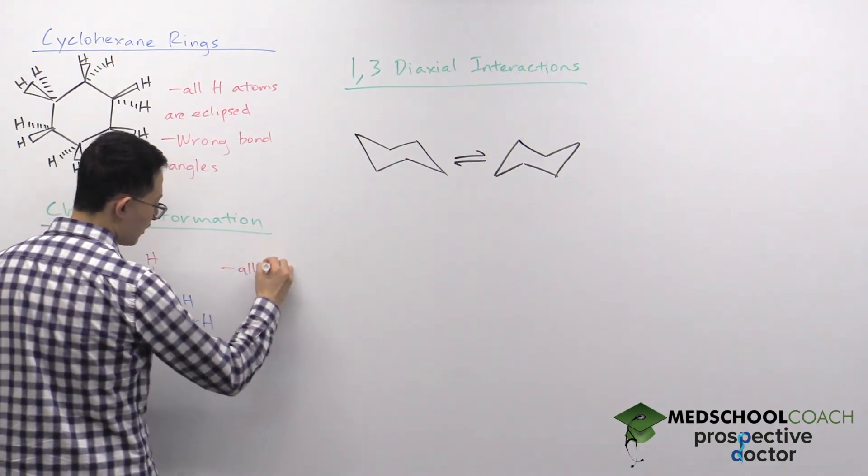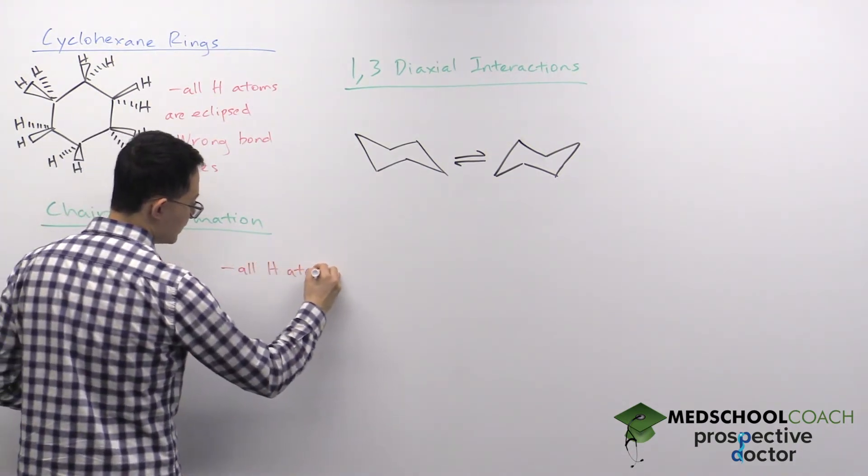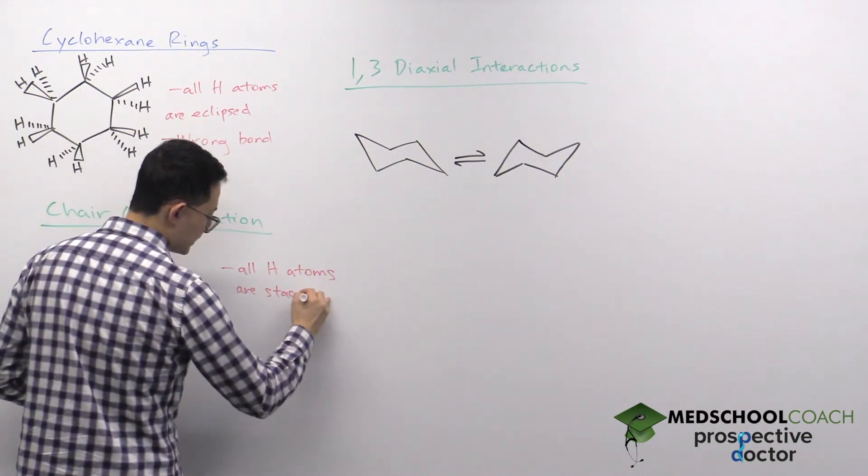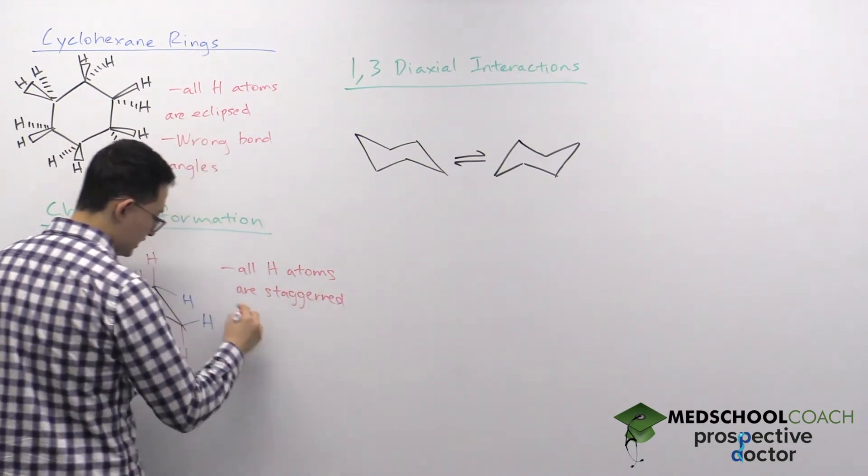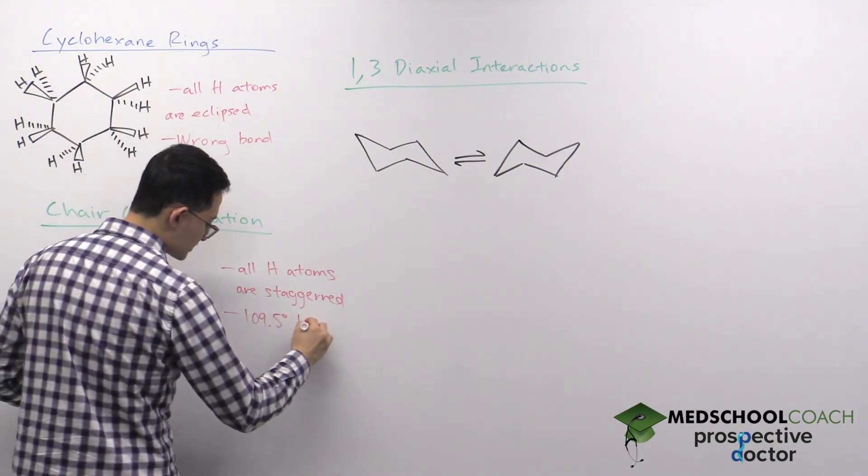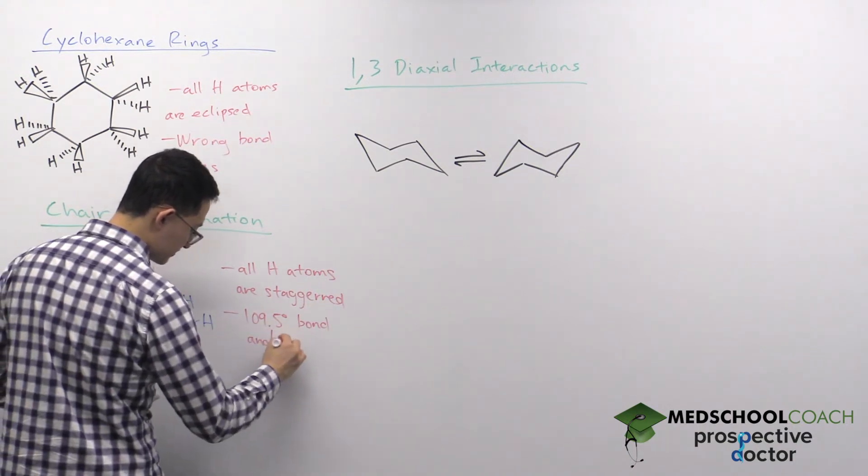If you look at the bond angles, you also have your 109.5 degree bond angles that you expect for sp3 hybridized atoms.